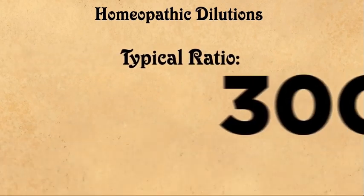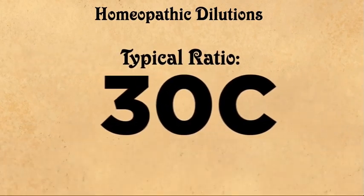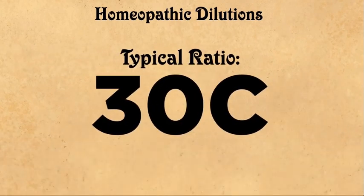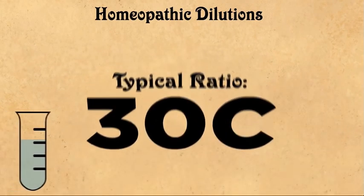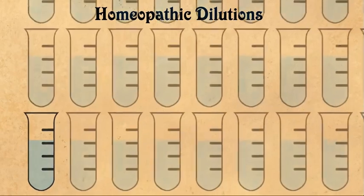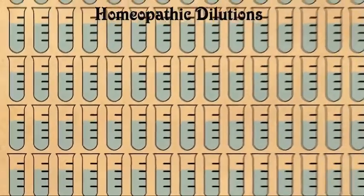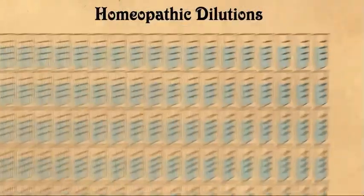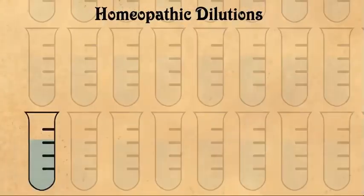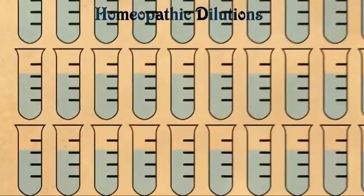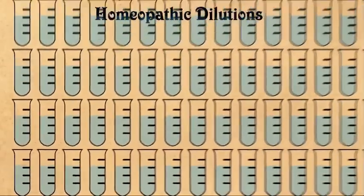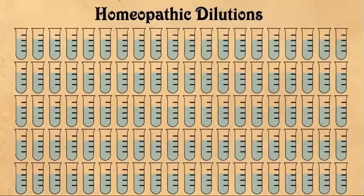This dilution ratio was the one advocated by Hahnemann. It means that the original ingredient is diluted by a factor of 100, and that is then diluted by a factor of 100, and so on, 30 times.